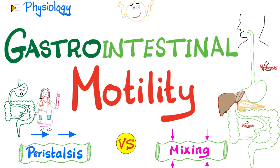Hey guys, it's Medicosis Perfectionitis, where medicine makes perfect sense. Let's continue our physiology playlist. In previous videos, we talked about the difference between the slow wave rhythms and the spike potentials, the calcium-calmodulin system, and the enteric nervous system, which includes the myenteric plexus for motility and the submucosal plexus for secretions.